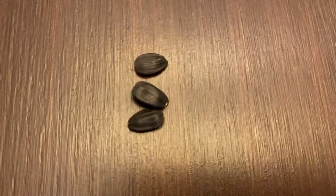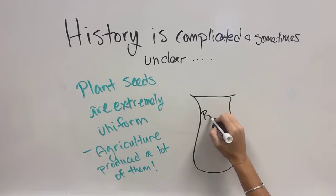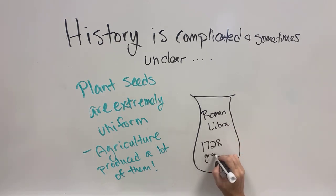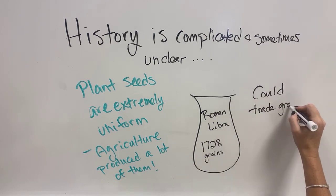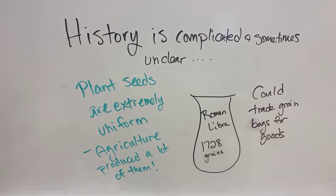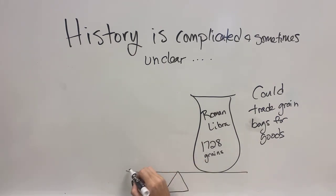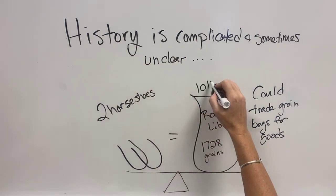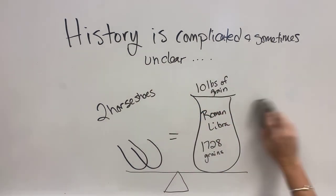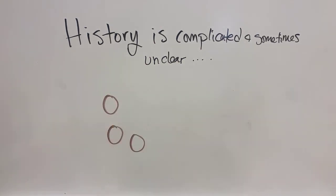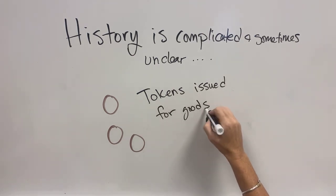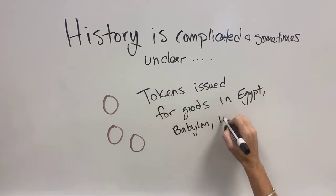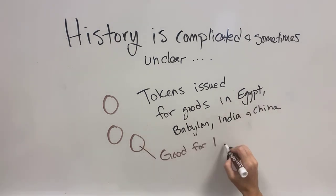So all of these, depending on which culture and which society, could have been used for counting and trading in goods. What would happen is that they would use these as measurement. The Romans decided that a pound were going to be 1,728 grains, typically of carob seeds. And so then you could trade bags of grain for goods — like a pound of grain maybe would be equivalent to two horseshoes. Then along comes the idea of tokens, which were issued for goods in exchange for grains or food sources in Egypt, Babylon, India, and China.